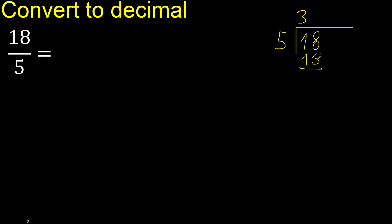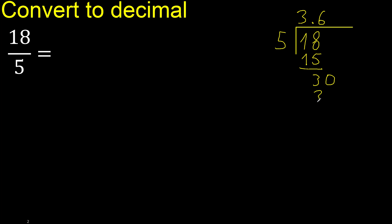18 minus 15 is 3. There is no next digit, so we complete with 0 — here the decimal point. 30: 5 multiplied by 6 is 30, not greater. 30 minus 30 is 0.